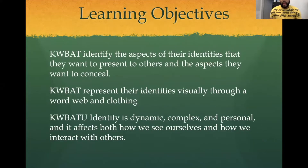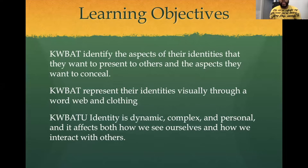Learning objective: Kipses will be able to identify the aspects of their identity that they want to present to others and the aspects they want to conceal — which means to hide. Kipses will be able to represent their identities visually through a word web and clothing. Kipses will also be able to understand that identity is dynamic, complex, and personal. It affects both how we see ourselves and how we interact with others.